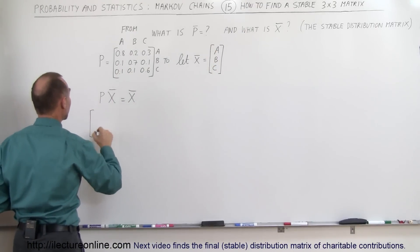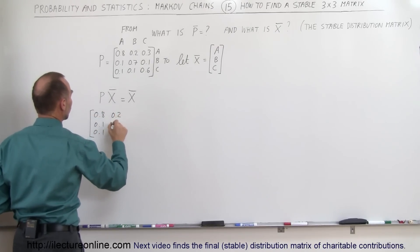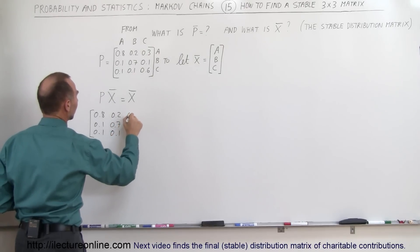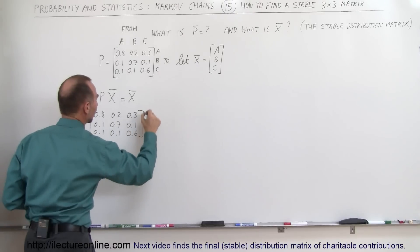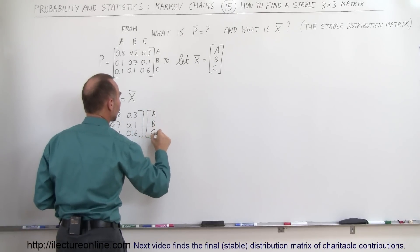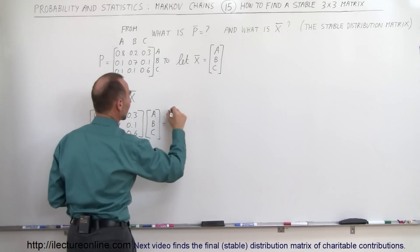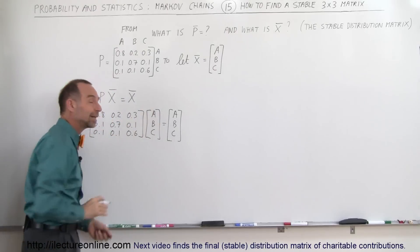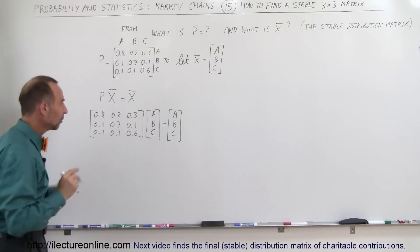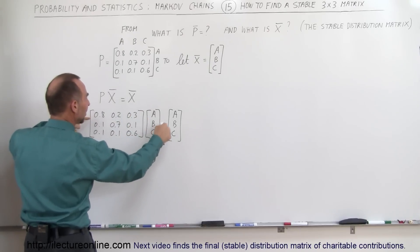We're going to take the probability matrix — 0.8, 0.1, 0.1, 0.2, 0.7, 0.1, 0.3, 0.1, and 0.6 — and multiply it times A, B, C. Those are the final values of the three states, and we should get back the same three values A, B, and C. So we multiply the first row by this column and set it equal to A.